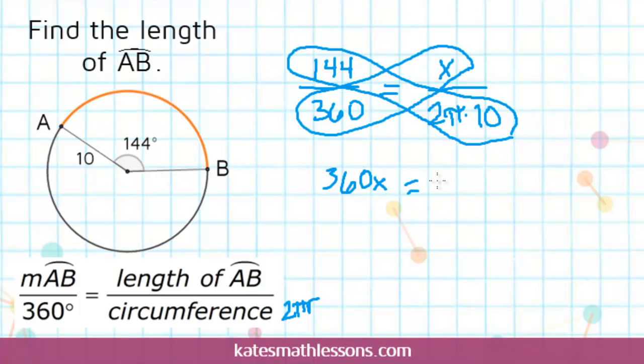So if I do 144 times 2 times 10, that gives me 2880. And then I can just put the pi at the end. So this is exact. If you're looking for a rounded answer, you can go ahead and multiply by the pi button on your calculator. Next we need to get the x by itself. x is being multiplied by 360, so to undo that we can divide both sides by 360.